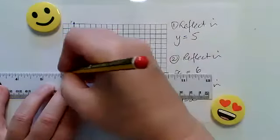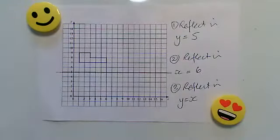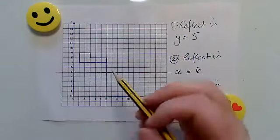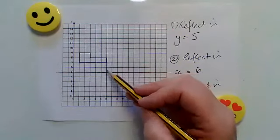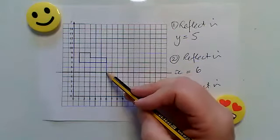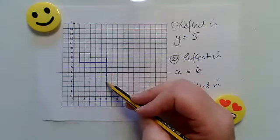I'm going to draw that line in. Now when we're reflecting shapes, every point has to be exactly the same distance away from the line of reflection but on the opposite side.